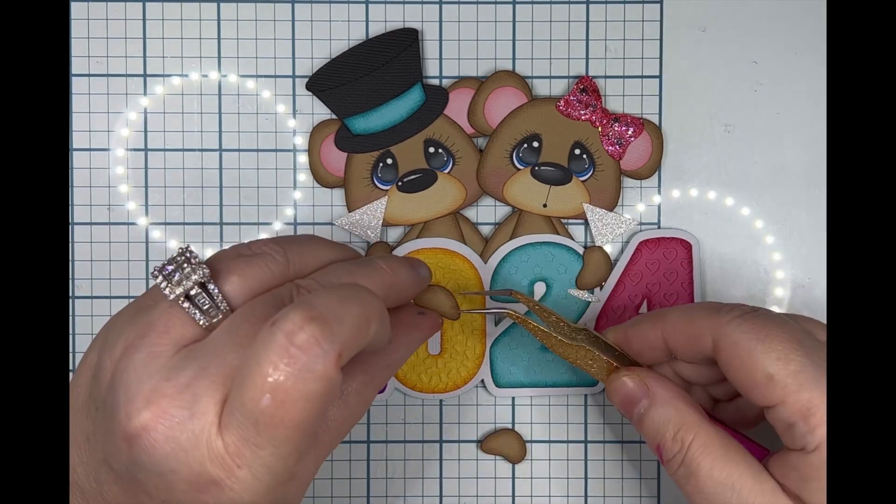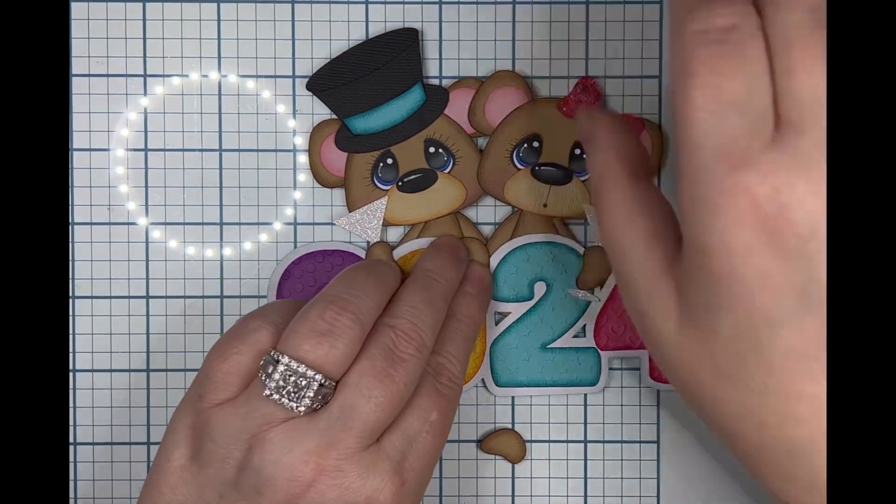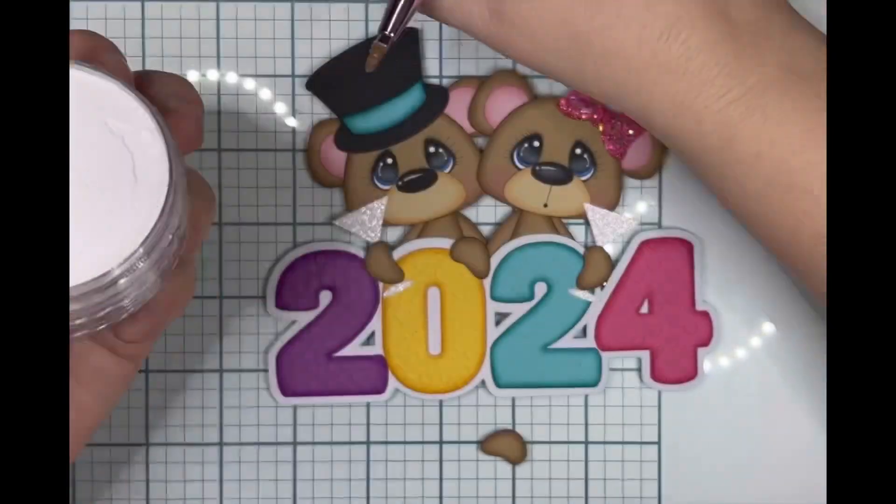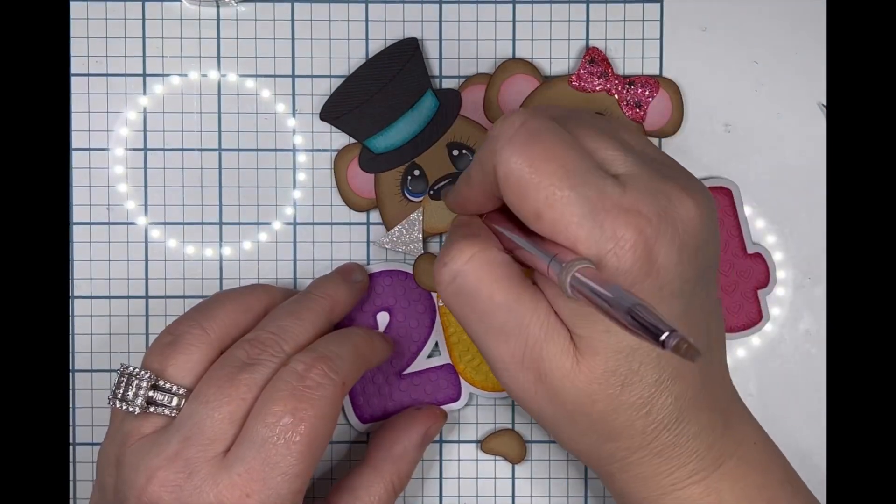You're going to glue the arms on the back of your bears before you glue them together and behind the 2024. Just go ahead and put the hands where I placed them.